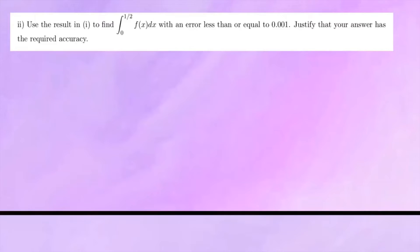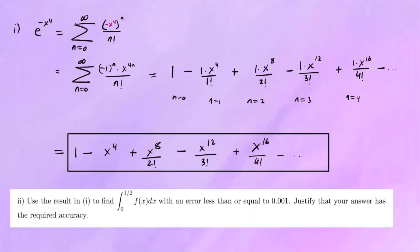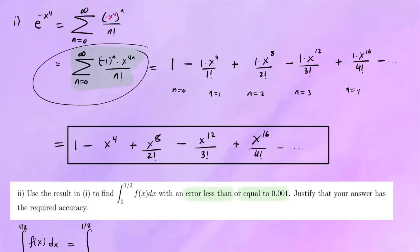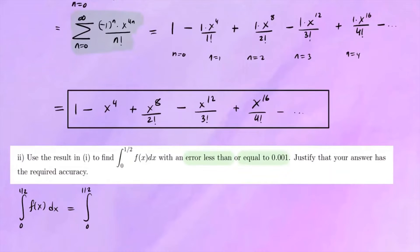For the second part, we're going to take our answer from the first part — the closed form and the expanded terms — and integrate from 0 to 1 half, approximating that integral with an error less than or equal to 0.001. Since f of x is a non-elementary function, we'll use the series answer. So this will be the integral from 0 to 1 half of the infinite sum from n equals 0 to infinity of negative 1 to the n times x to the 4n over n factorial, dx.